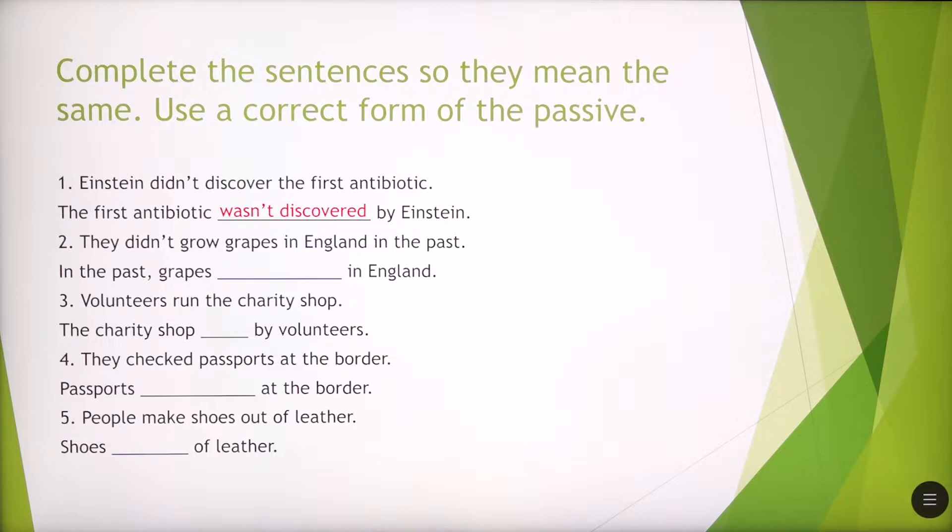Number two, they didn't grow grapes in England in the past, which means that in the past grapes weren't grown in England. Number three, volunteers run the charity shop. That is to say, the charity shop is run by volunteers.